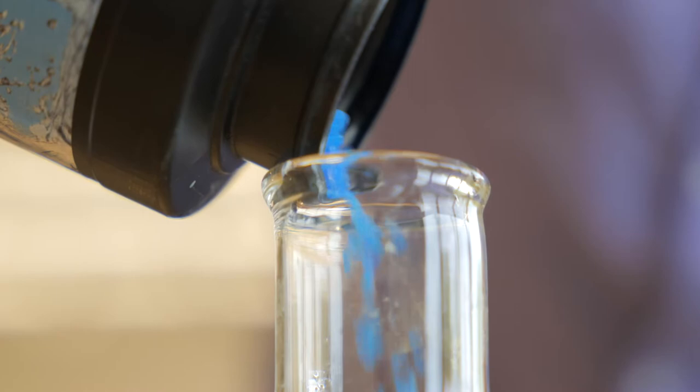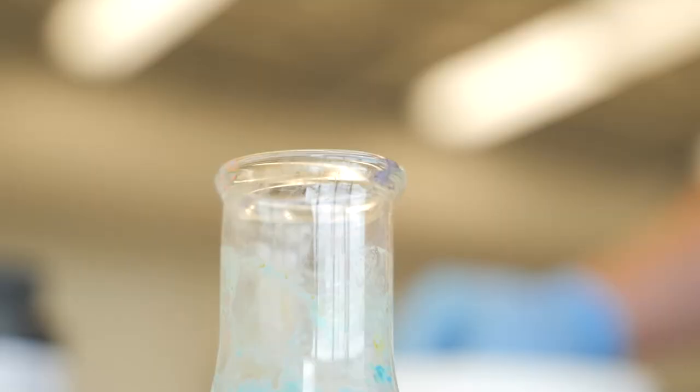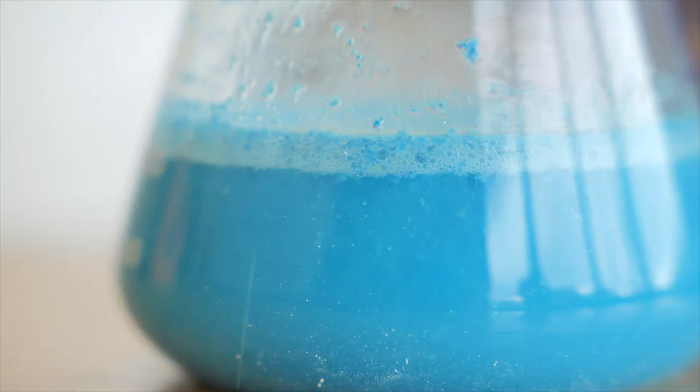What I do is take root kill, which is copper sulfate, dissolve it in water, and then add baking soda. It reacts like a baking soda-vinegar volcano, produces a gas, and creates a precipitate at the bottom that is copper carbonate.